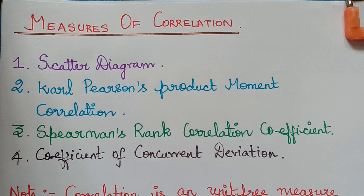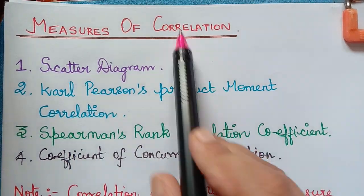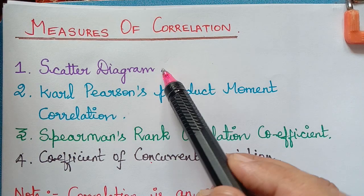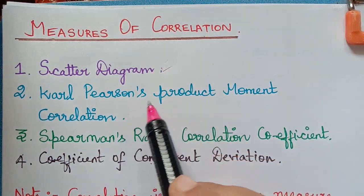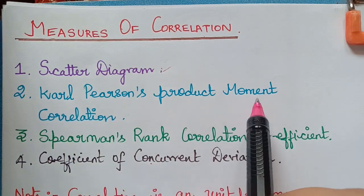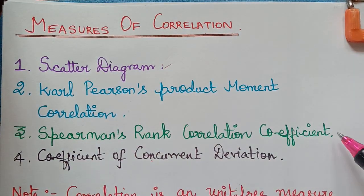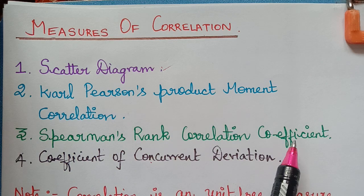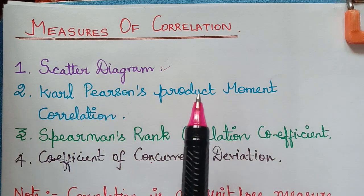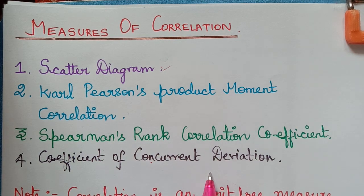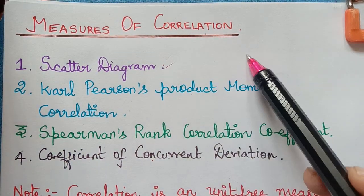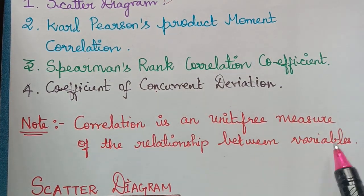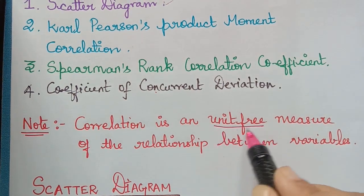The measures of correlation means the way of measuring the correlation. There are different ways to measure a correlation. We can measure it by using the scatter diagram, and there is a formula by Carl Pearson known as the Carl Pearson product moment of correlation, then Spearman's rank correlation coefficient, and it can also be found by the coefficient of concurrent deviation. Correlation is a unit-free measure of the relationship between two variables — there is no unit for correlation.